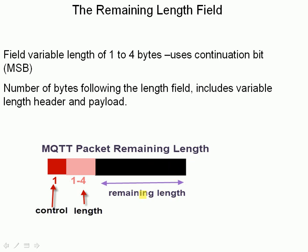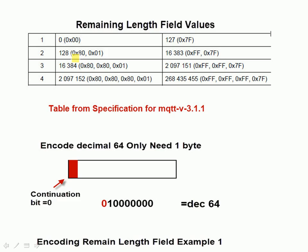The control and the packet length field aren't part of the remaining length. Here's the table taken from the actual specification itself: we use 1 byte if the packet length is between 0 and 127, 2 bytes if it's between 1 to 8 and 16000, 3 bytes for the next range, and 4 bytes for the largest range.